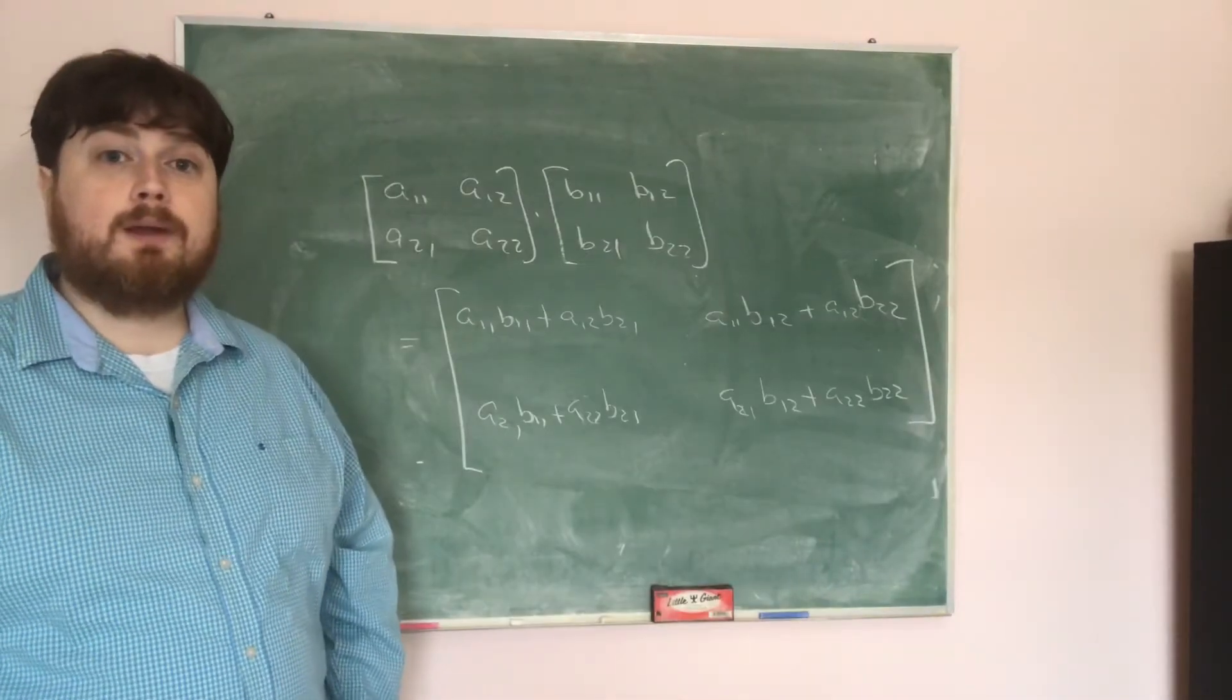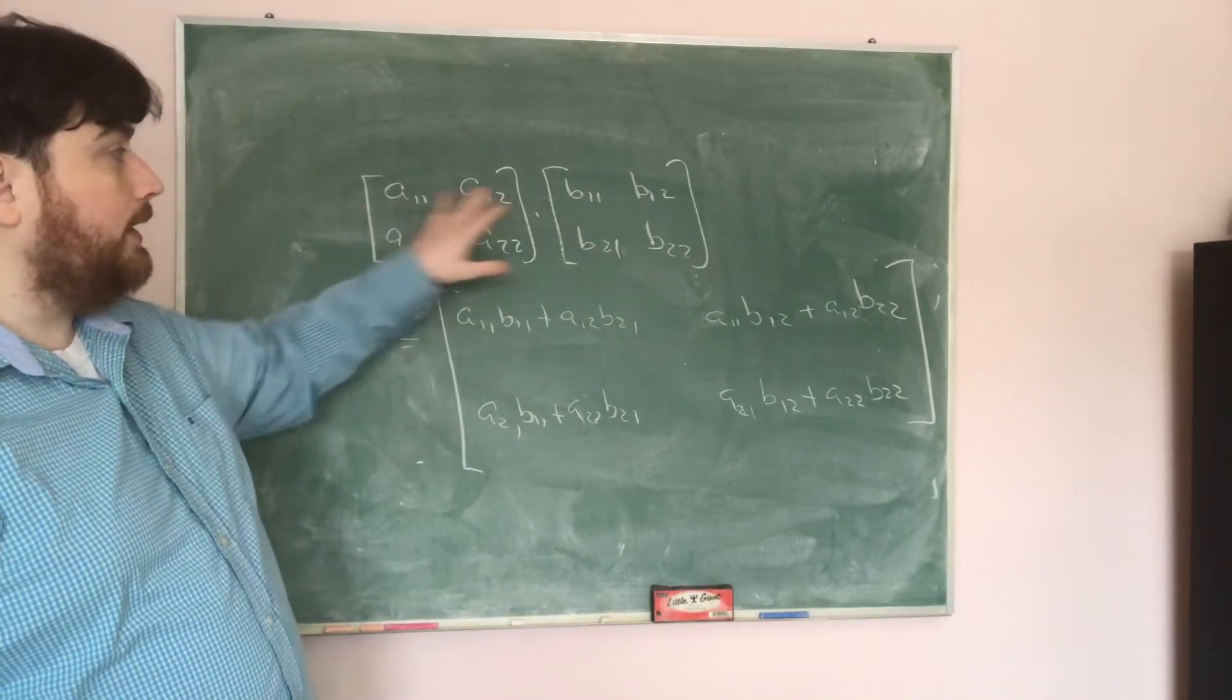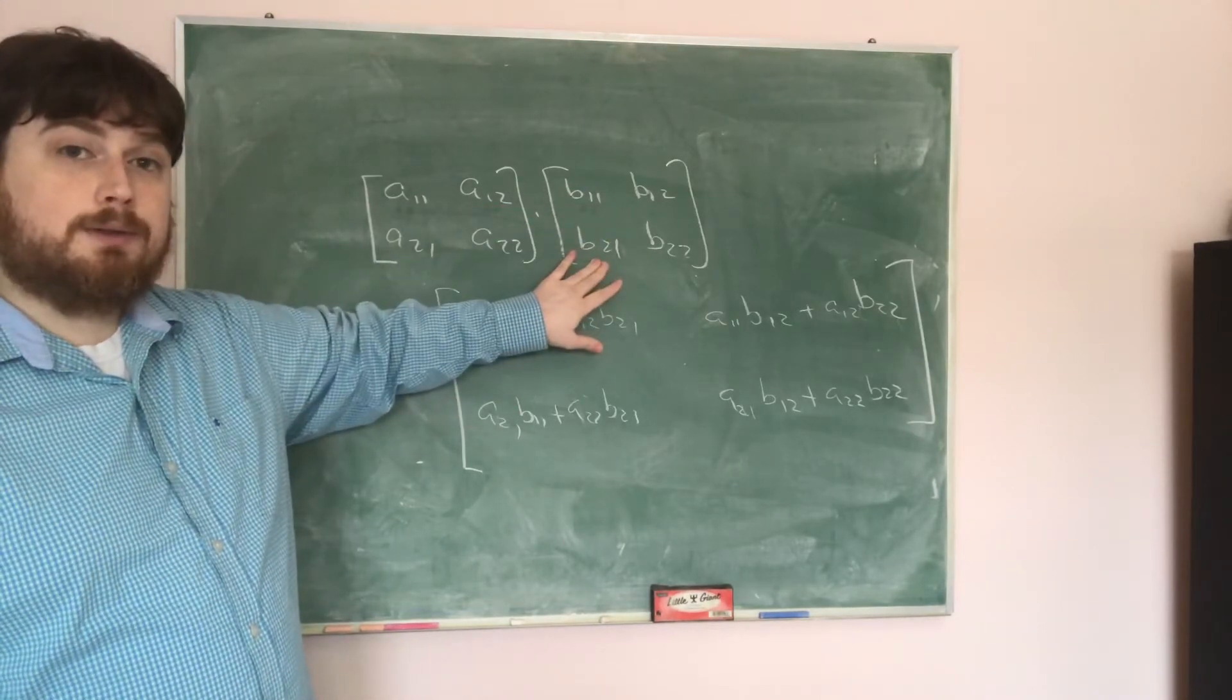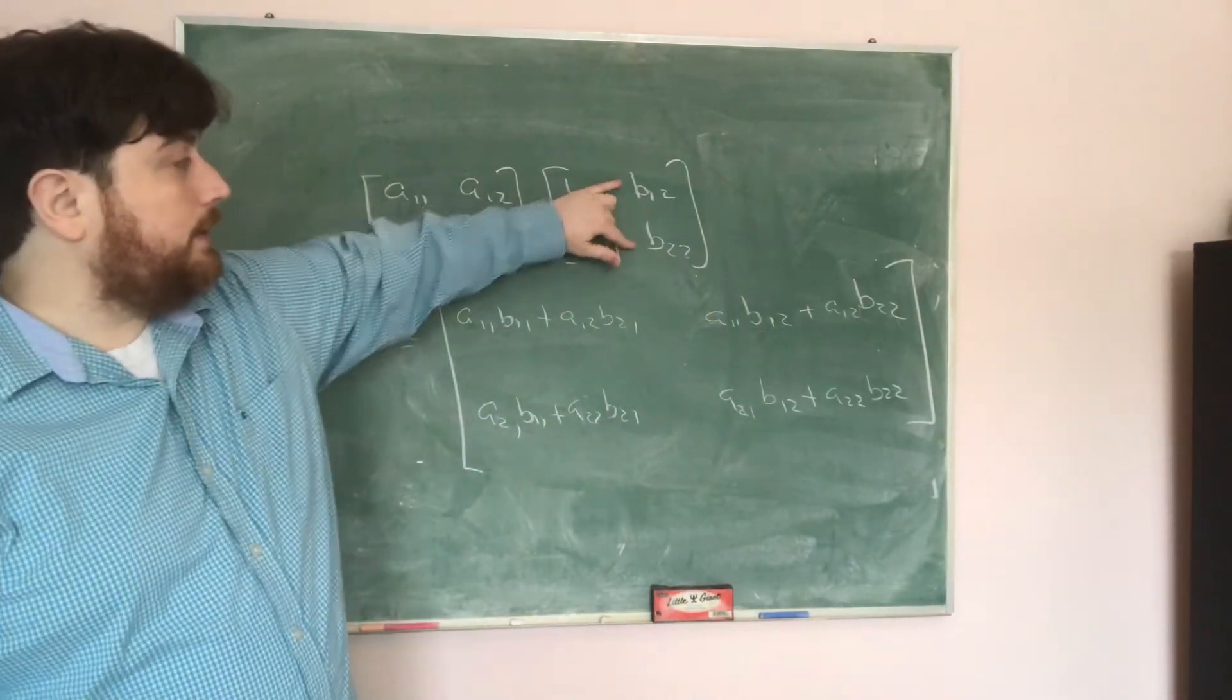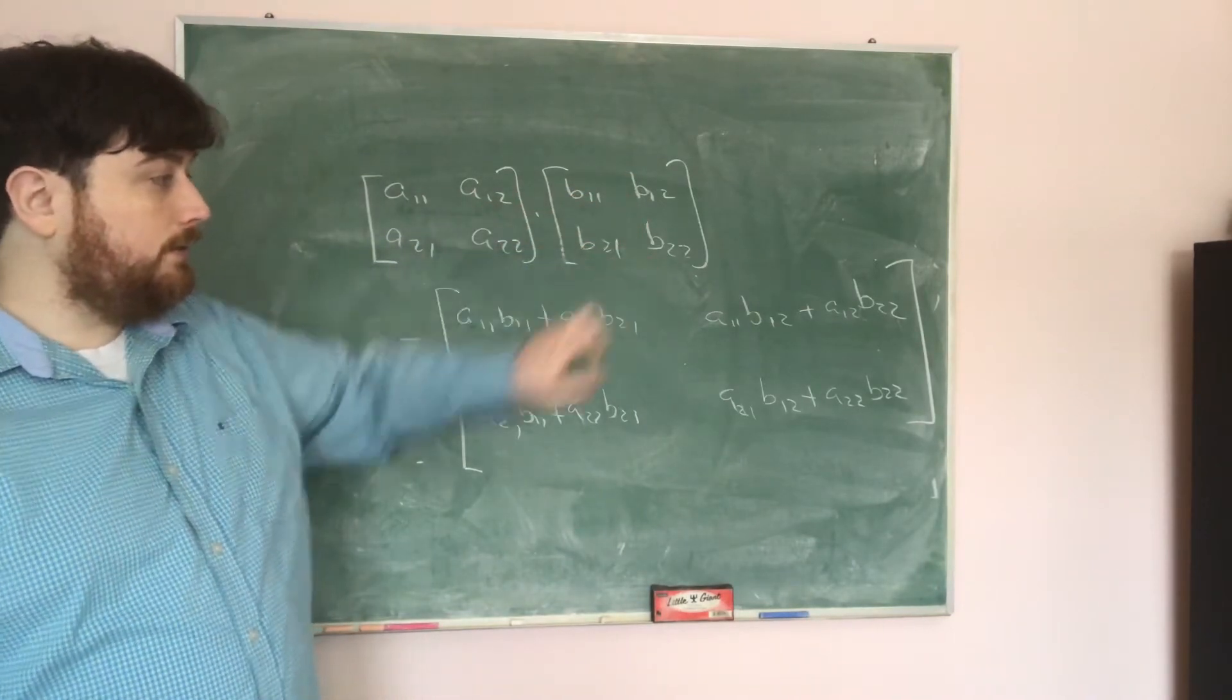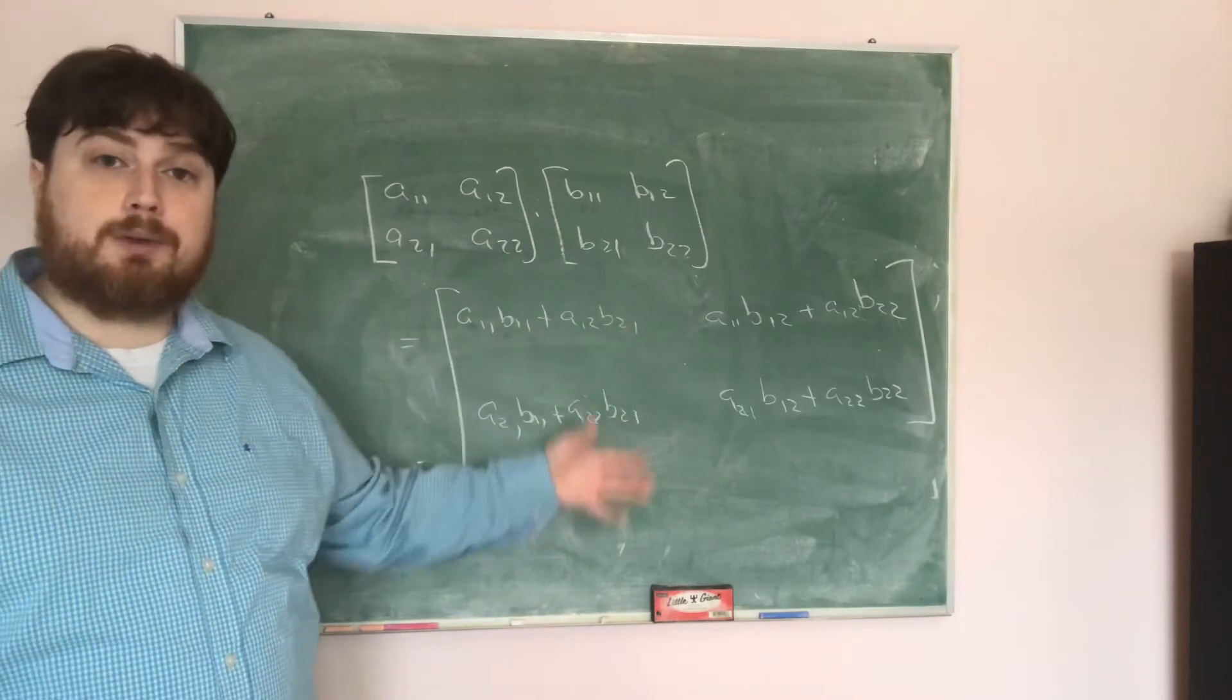If I take A times B using matrix multiplication, this times this is A 1 1 times B 1 1 plus A 1 2 times B 2 1. Then the first row, second column is the first row times the second column here. So A 1 1, B 1 2 plus A 1 2, B 2 2. And if I continue on, I get that the multiplication ends up with this thing here.